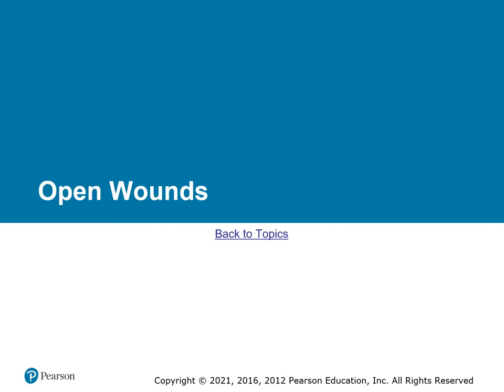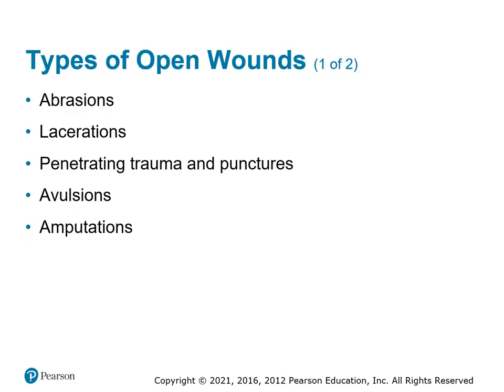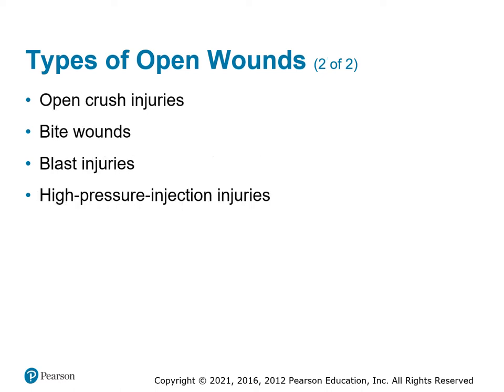Now let's talk about open wounds — things that breach the skin. We have different types: abrasions, lacerations, penetrating trauma, punctures, avulsions, and amputations. Other types include open crush injuries, bite wounds from animals or people, blast injuries, or high-pressure injection injuries. A friend of mine was cleaning a paint gun with paint thinner and accidentally activated the trigger, injecting himself with paint thinner — a pretty serious injury from a high-pressure process.